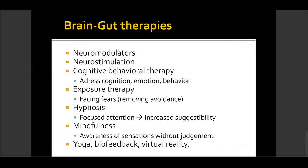The brain-gut therapies we use include neuromodulators — most commonly amitriptyline in low doses, or fluoxetine for patients with comorbid depression or anxiety. We decide between amitriptyline and SSRIs based on clinical presentation: amitriptyline for patients with more diarrhea, and SSRIs for those with more constipation. Cognitive behavioral therapy and exposure therapy also address catastrophizing and the family environment component.